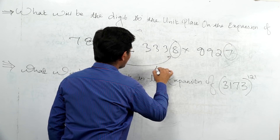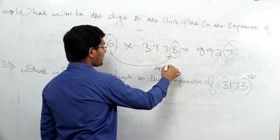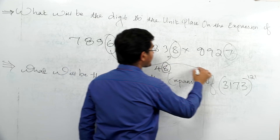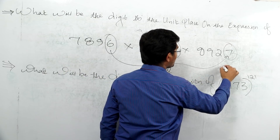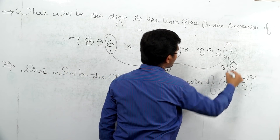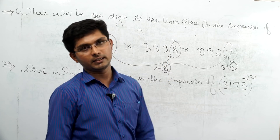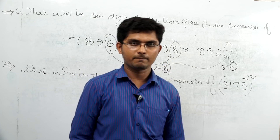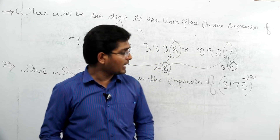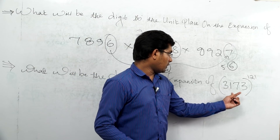Let's verify: 6 × 8 = 48, the unit digit is 6. Then 6 × 8 = 48, and 8 × 7 = 56. The unit digit is 6. So the answer is 6.